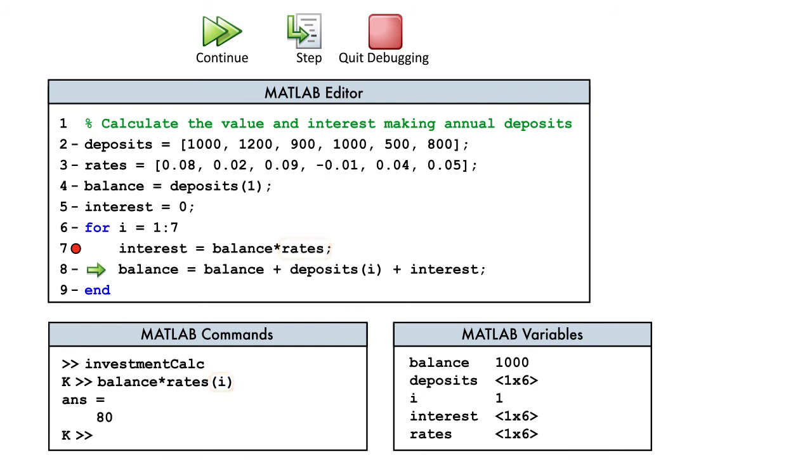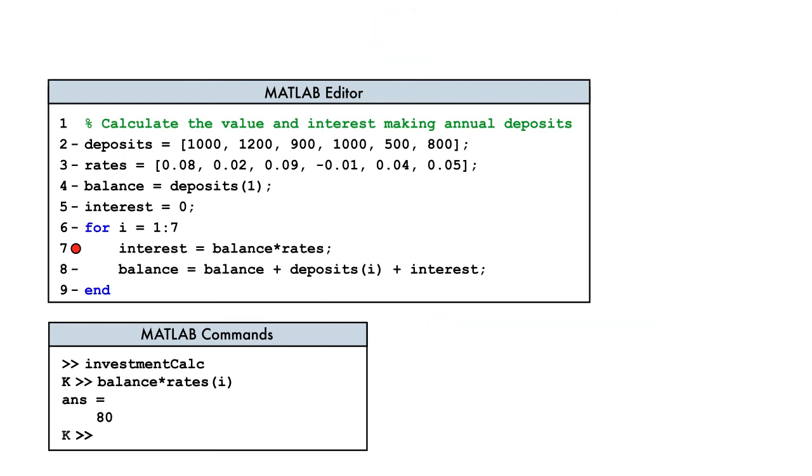Since we found the error, let's press the Quit Debugging button. Then, update and save the code file. It's important to quit debugging because we can't save our changes in debug mode.